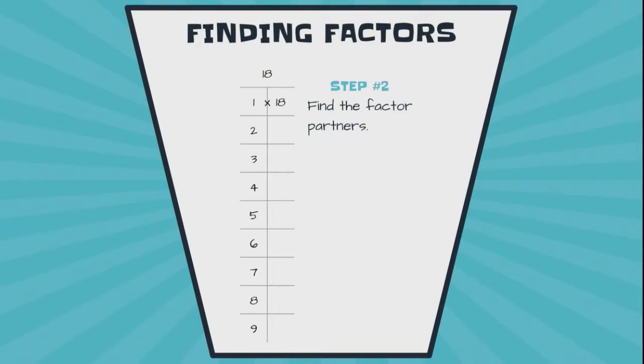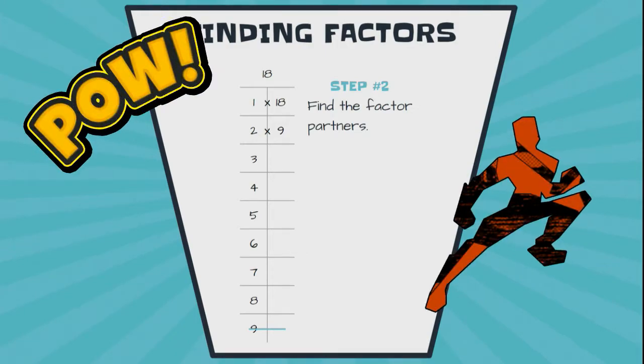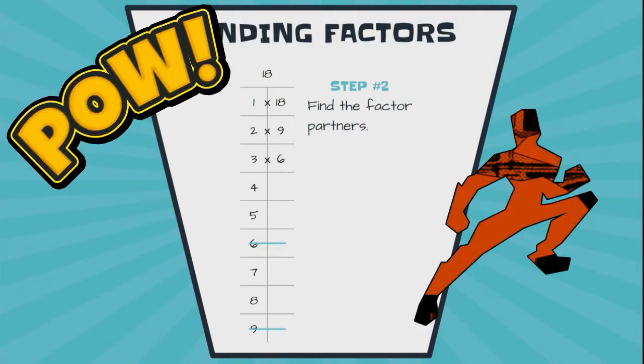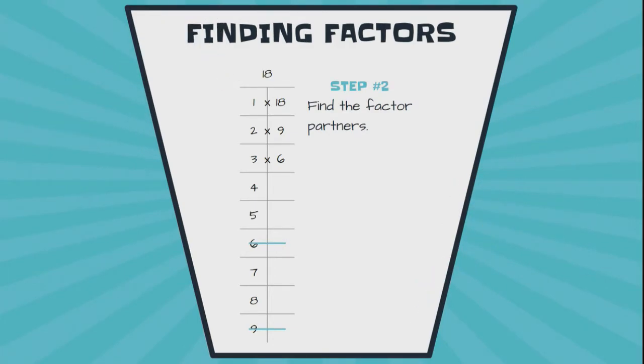So, for instance, one times what equals eighteen? Well, eighteen does. Okay. So, then I go to the next number. Two times what equals eighteen? Two times nine does. Three times what equals eighteen? Now, if I can't think of it, that doesn't mean it doesn't exist. It just means I need to count by threes. And if I need to make a list off to the side of my threes. Three, six, nine, twelve, fifteen, eighteen. Oh, good. It works. Three times six.